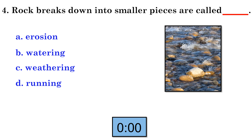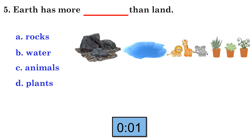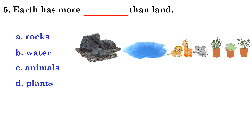Earth. Question 5: Earth has more water than land. B. Water.